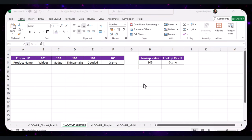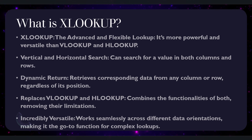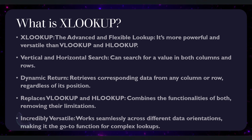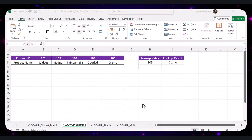Now moving on to the star of the show — XLOOKUP. XLOOKUP is more advanced and flexible; it can replace both VLOOKUP and HLOOKUP and offers more powerful features. It allows you to search for a value in a column or row and return a corresponding value from another column or row. Unlike VLOOKUP and HLOOKUP, XLOOKUP can search both horizontally and vertically, making it incredibly versatile. Open the XLOOKUP Simple sheet in the practice file.